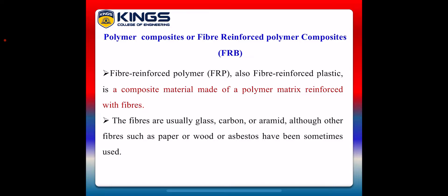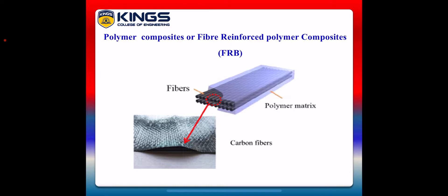The polymer composites are fiber reinforced polymer composites, simply called FRP. The FRP is also called fiber reinforced plastics. It is a composite material made up of a polymer matrix reinforced with fibers. The fibers are usually glass, carbon, or aramid, although other fibers such as paper, wood, or asbestos have sometimes been used. The diagram shows two top layers of polymer matrix and one middle layer of reinforced fiber — this is called FRP.